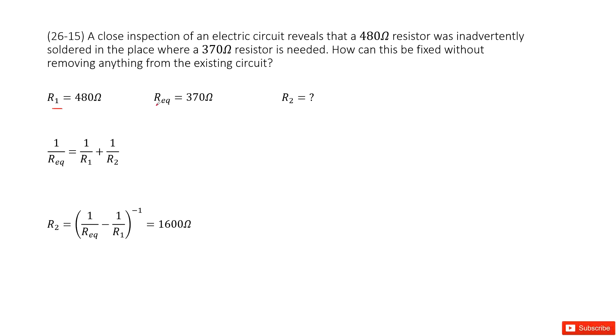So the only thing that can be possible is to do parallel connection. So we need to find another resistor, R2, to connect in parallel with R1 to make the equivalent resistance equal to 370Ω. Right?